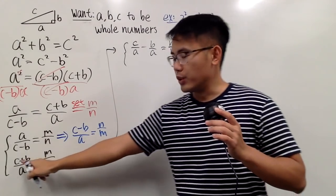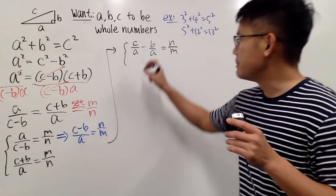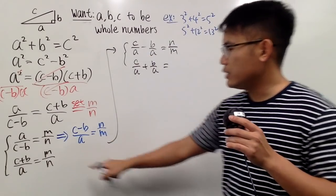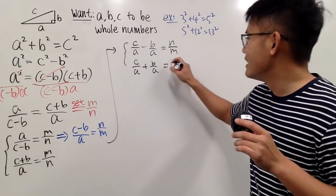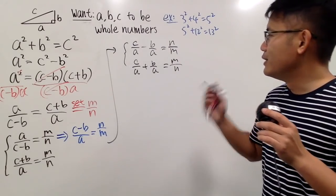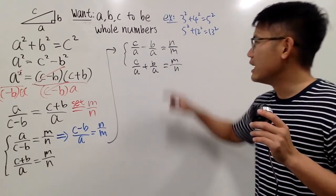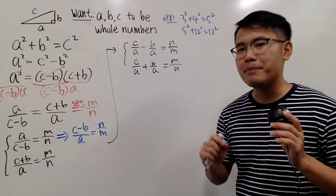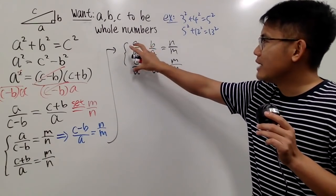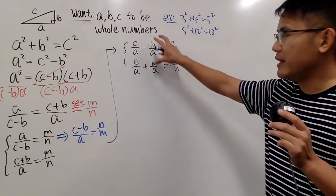And secondly, we do the same. C over A plus B over A. This right here is equal to M over N. And notice, the beauty of this is that this and that are the same. Now,